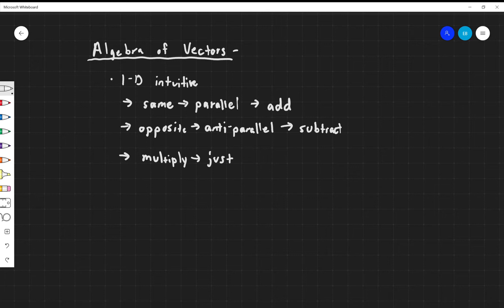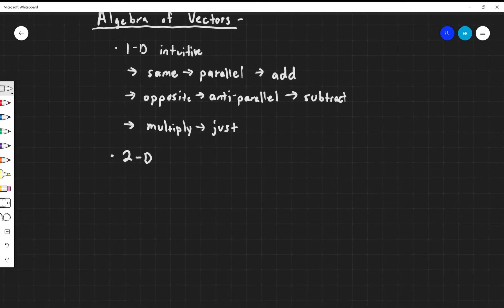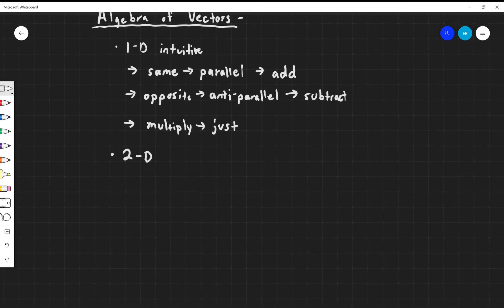Where things get tricky is when you start moving into two dimensions. For an example, let's say I want to take vector A and add it to vector B to get me some new vector. We'll call it C.